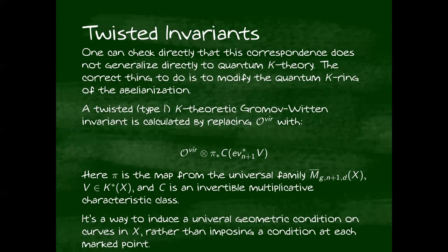What seems to work is don't work with the quantum K-ring of the abelianization. You work with some different version of the quantum K-ring. The idea is to use what are called twisted invariants, introduced by Givental and Coates for cohomology and Givental-Tonita for K-theory.